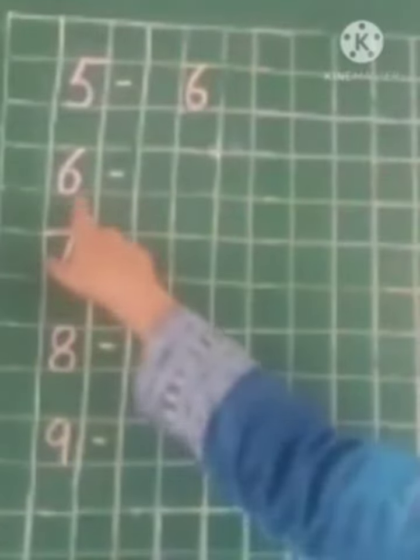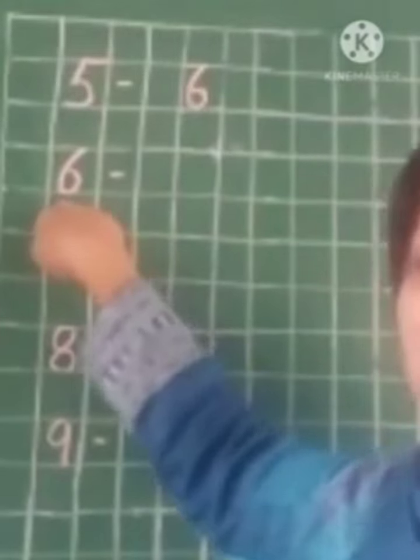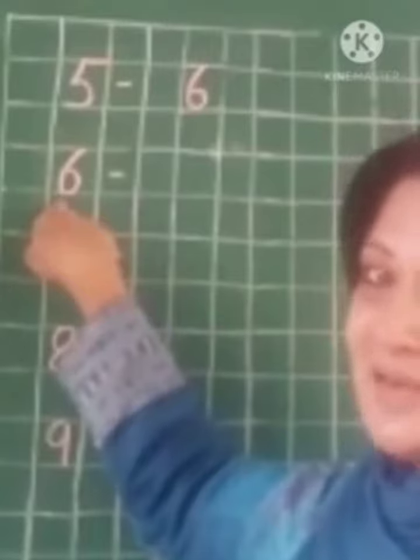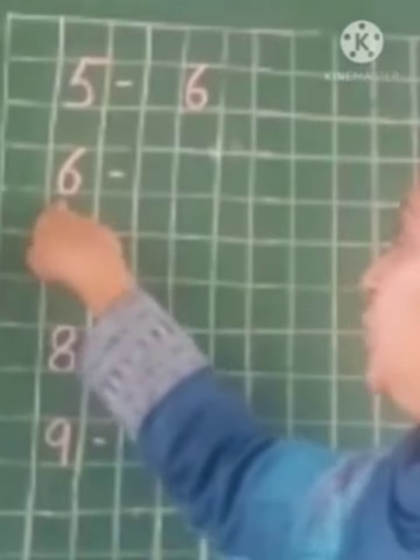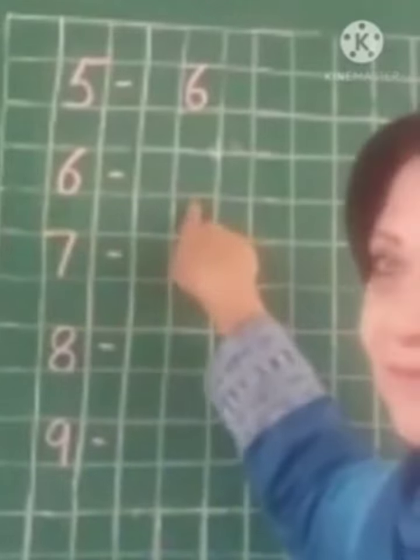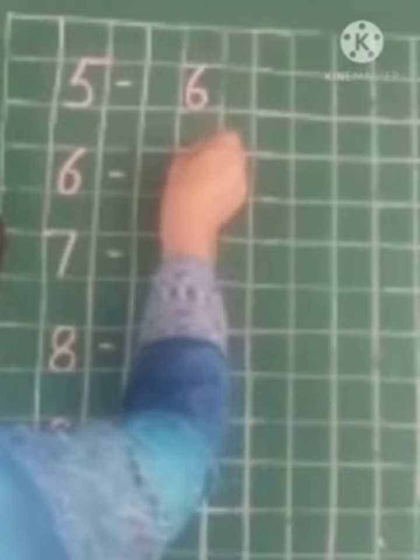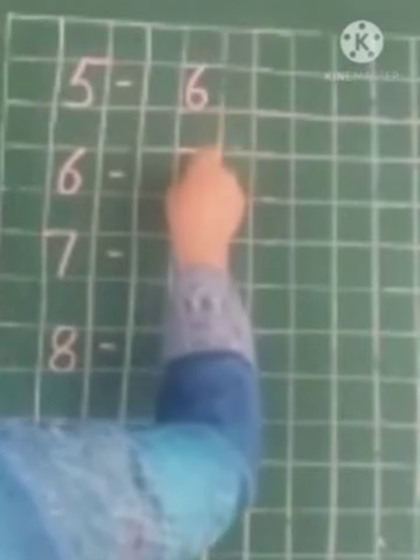Now which is the next number? This is number 6. So which number comes after number 6? Yes, you are right. We have to write here number 7. So let's write number 7. We will start from the corner, make a sleeping line and make a slanting line to make number 7.